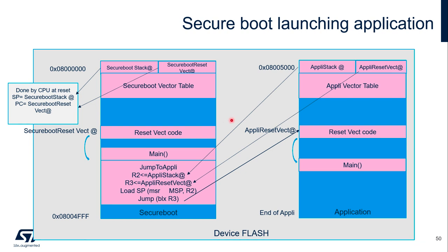This diagram illustrates how the bootloader launches an application. Assuming that we reserve 20 kbytes for the bootloader, the bootloader starts from the base address of the internal user flash, and the application starts at the base address plus an offset of 20 kbytes.